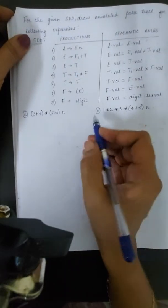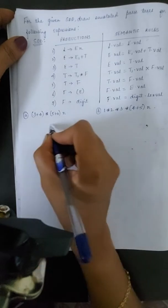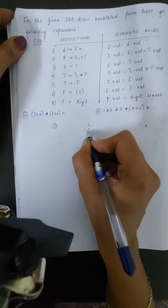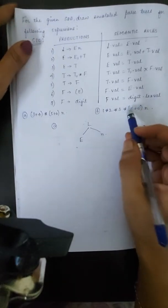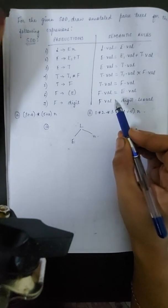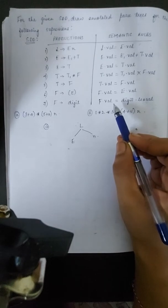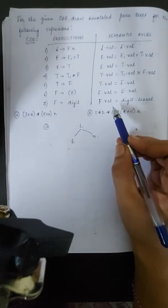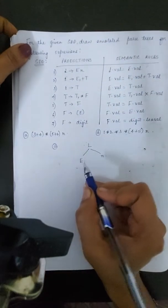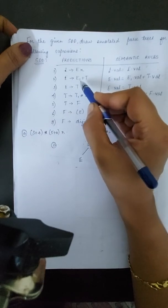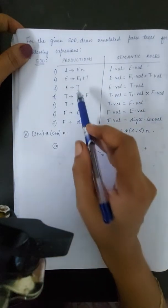Synthesized attribute means we get the value of the attribute only from its child. In this production, this is the child and this is the parent. So this value is sent to F dot val. Since it is an S-attributed SDD, it follows bottom-up parsing method, which in turn follows post-order traversal. To draw the parse tree, we look into the productions. E has two productions: E produces E plus T, and E produces T.